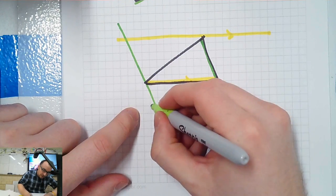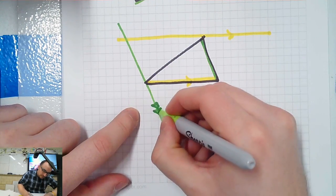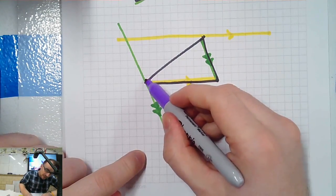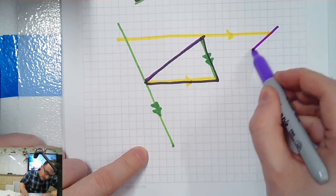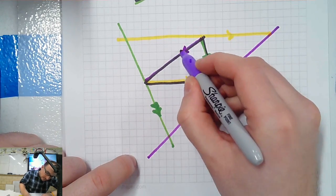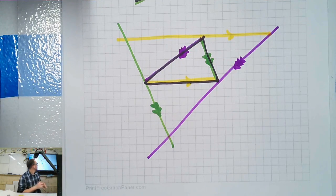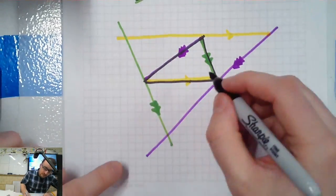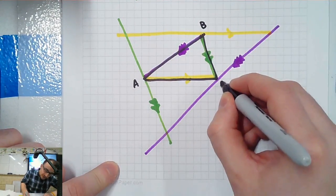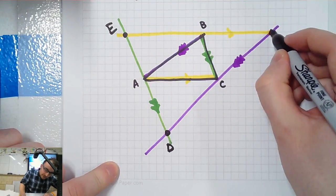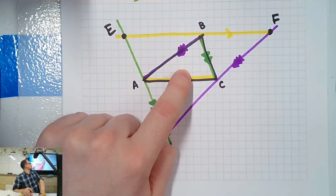So these guys will be parallel. And lastly, I'm going to make a line parallel to this, so these will be parallel. This makes another triangle. So if my original triangle was called A, B, C, I can call my new triangle D, E, F. And that's a medial triangle.